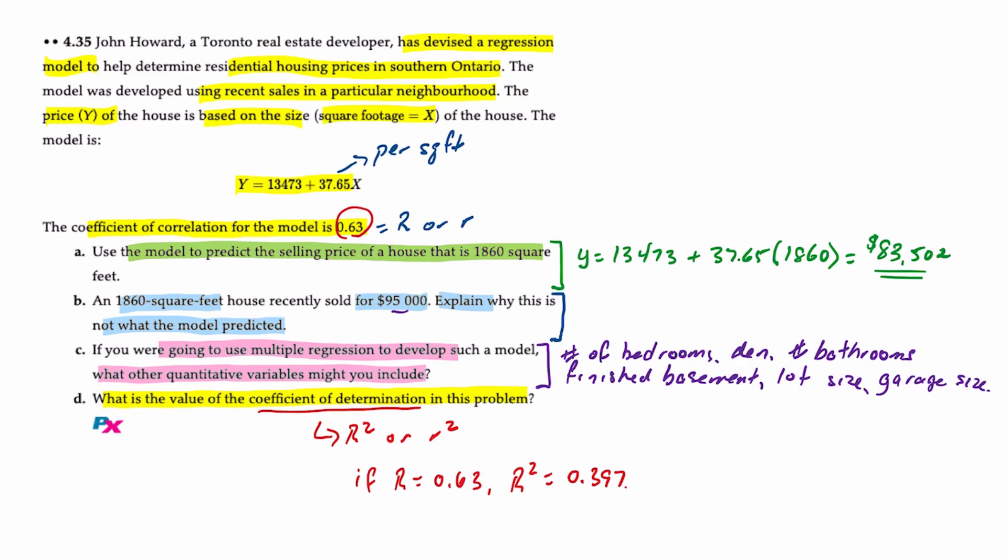Now what does coefficient of determination mean, or what does correlation coefficient mean? Well, first of all, let's just talk for one second about correlation coefficient. The correlation coefficient of 0.63 indicates that there's a positive relationship between house price and the number of square feet.